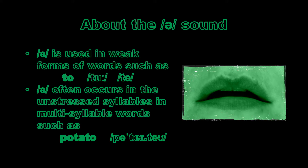A little information about this sound: the schwa, the 'uh', is used in two main places in British English. It occurs very regularly as a weak form of words, such as the word 'to', which as a weak form we pronounce as 'tuh' — for example, 'I'm going to the shops'. The schwa also occurs in longer, multi-syllable words as a way of creating weak syllables.